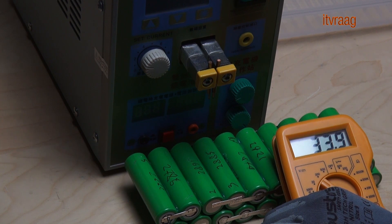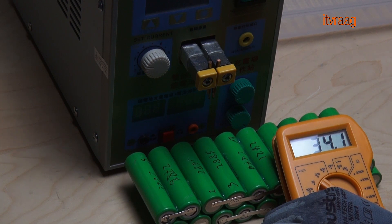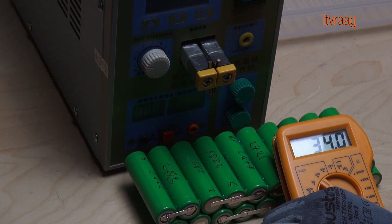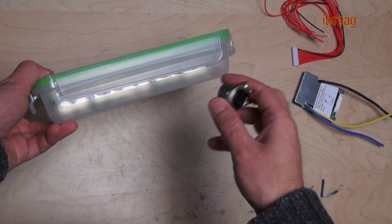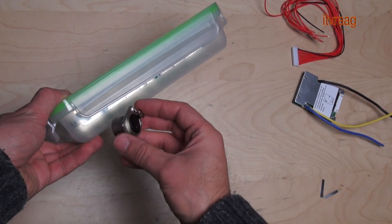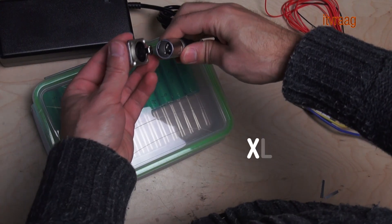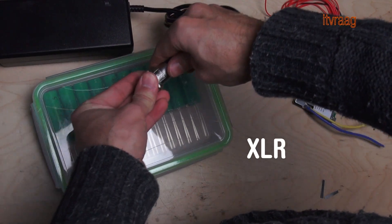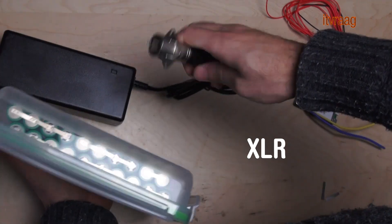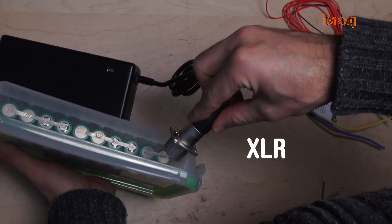Measuring the pack while discharged shows the connection is correct. In order to charge the battery, I'm using a charger from an electric bike which has an XLR plug. Because of that, I'll solder an XLR female plug to the battery.